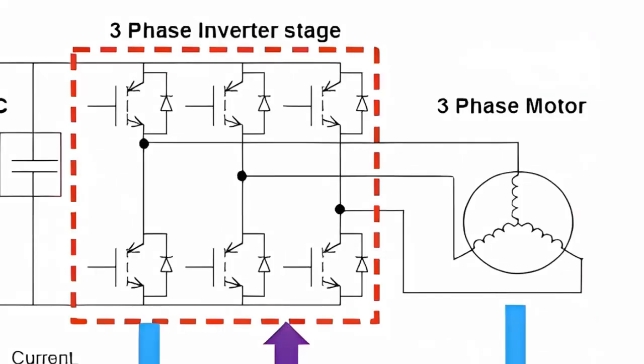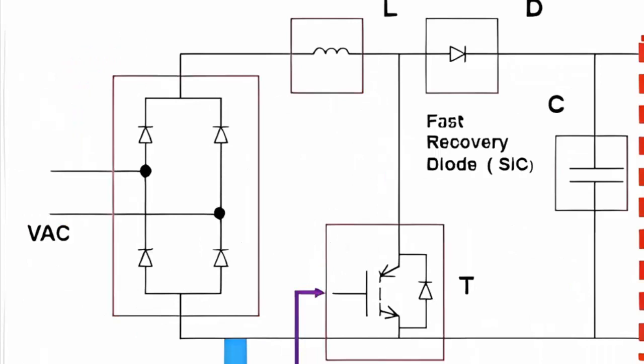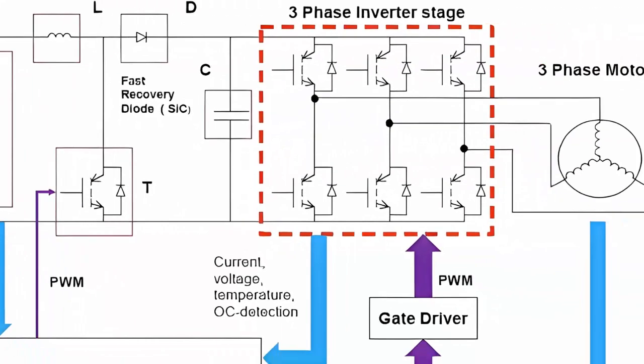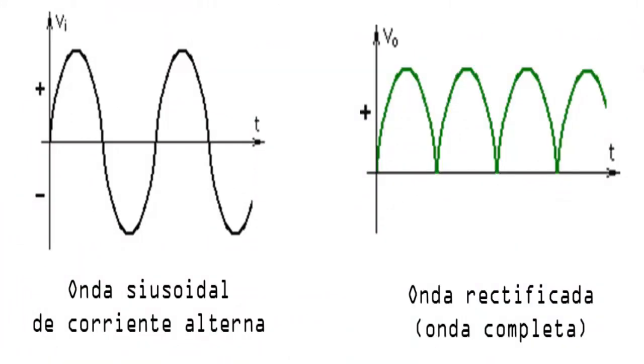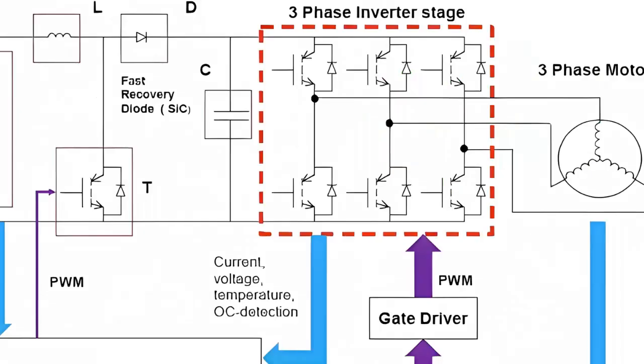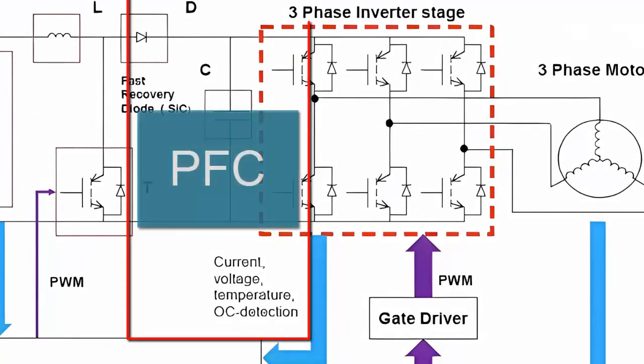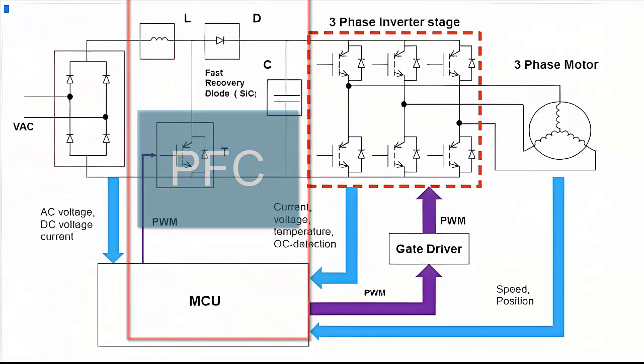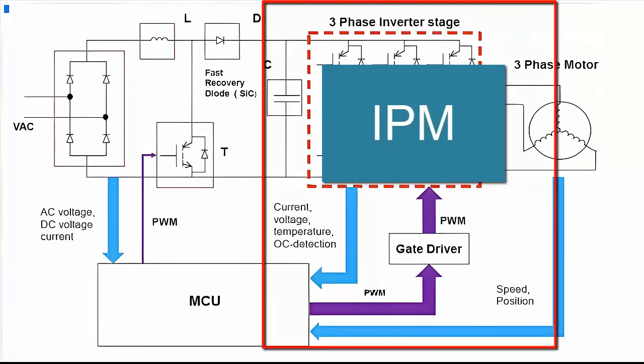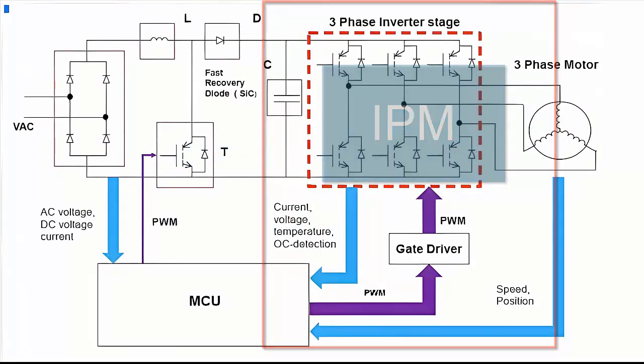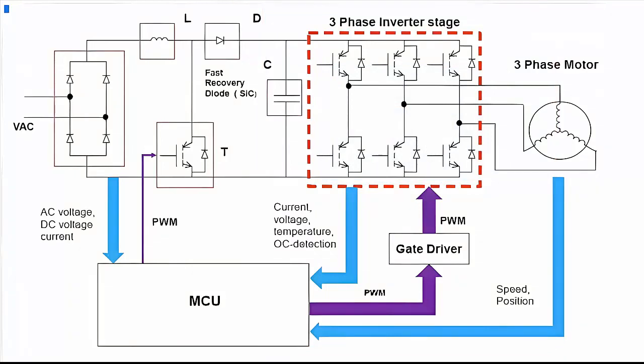To improve the efficiency of the equipment, the air conditioner compressor is of the 3-phase alternating type. Since the current feeding the equipment is of the monophasic alternating type, a transformation is required starting with rectification. Then, the PFC circuit controls the voltage, followed by the IPM circuit, which distributes the current to the 3 compressor coils through 6 transistors, generating a highly efficient 3-phase alternating current.